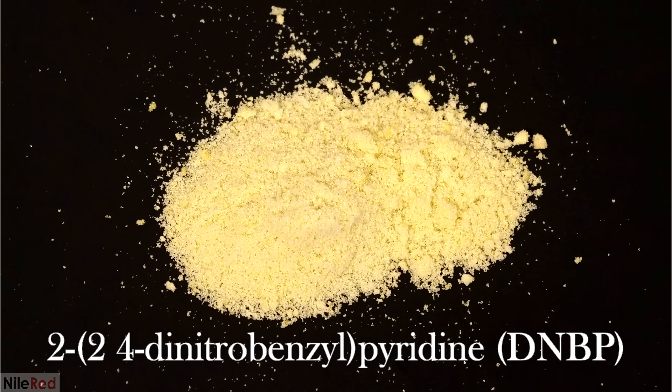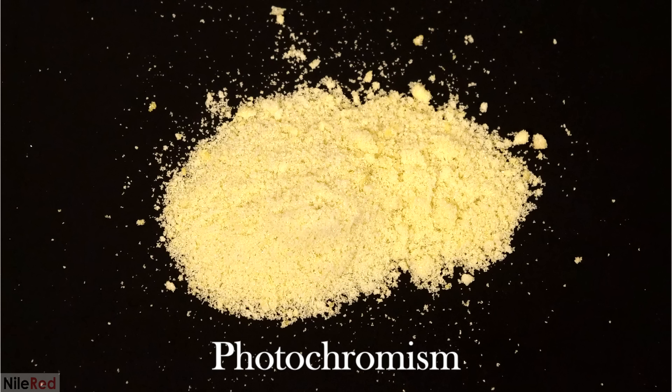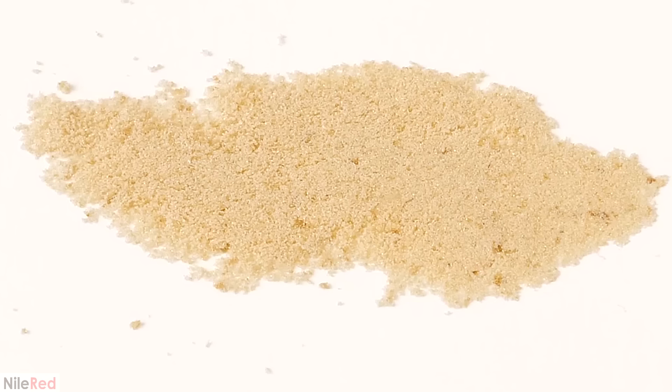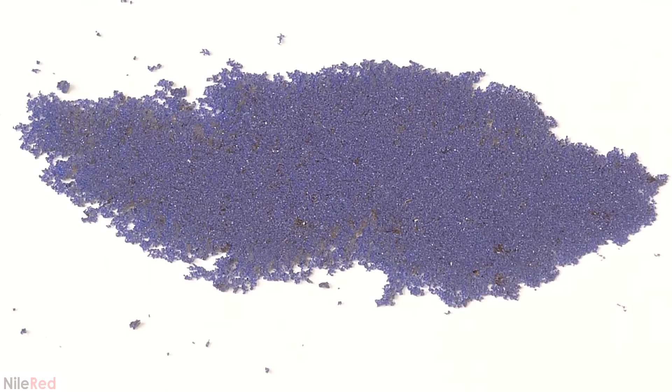Today I'll be making a chemical called 2-2,4-dinitrobenzalpyridine, or DNBP for short, which exhibits something called photochromism. This means that when it's exposed to light, it undergoes a reversible change in color. Under normal conditions, it's a brownish-yellow, but when it's exposed to UV or sunlight, it turns blue. Then if it's left in the dark for several hours, it slowly reverts back.